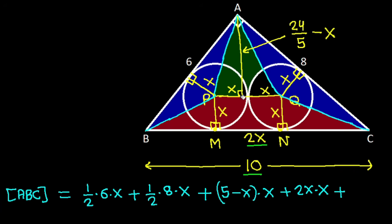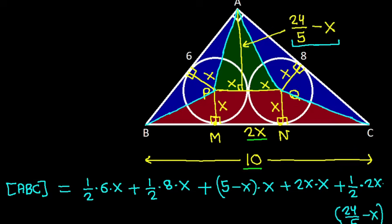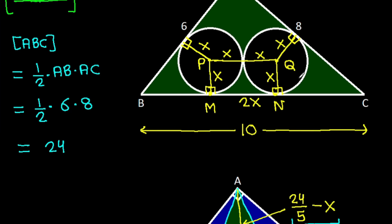So this height will be 24 over 5 minus X. This area will be one-half times base PQ, that is 2X, and height is 24 over 5 minus X. And the area of ABC is 24.